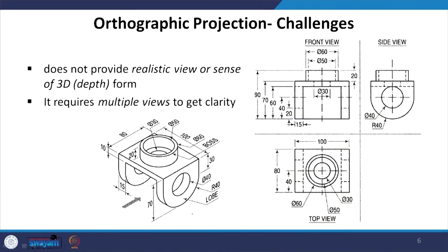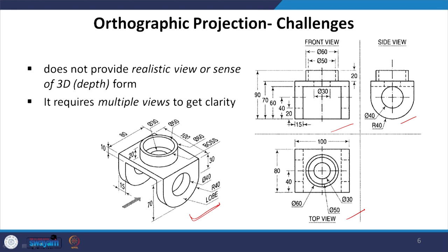This is the isometric view of the same object represented by those 2-dimensional drawings — the isometric drawing has been derived from those three drawings. It is much easier to perceive what the object is from a 3D view. When we look at the 2D drawings, it is not immediately obvious what the object is, but with a 3D representation it becomes clear directly.